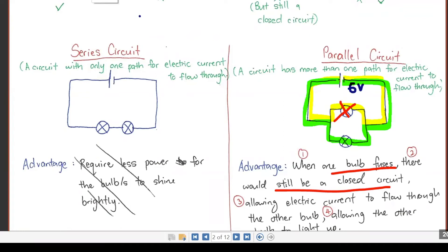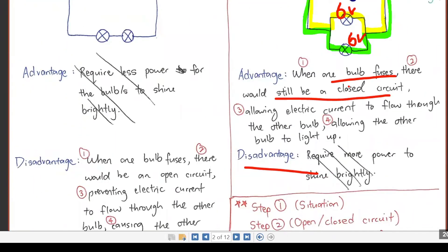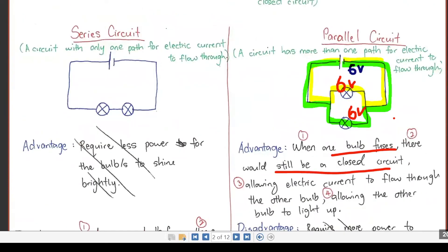That means I don't even need to share. I can give six volts to this one, I can give six volts to this one. So remember I told you before the disadvantage is that it requires more battery. My battery will run out very fast because I keep giving six volts to this, six volts to this. All my battery are given to one bulb, all of my battery are given to the other bulb.